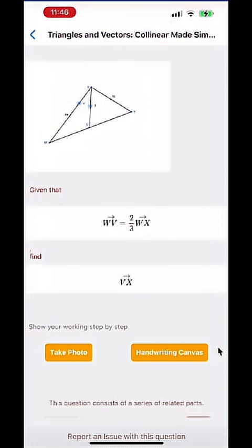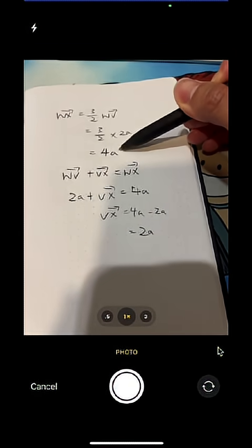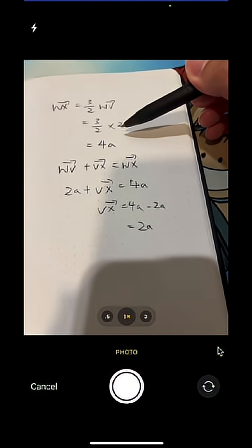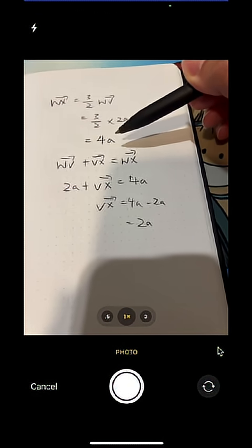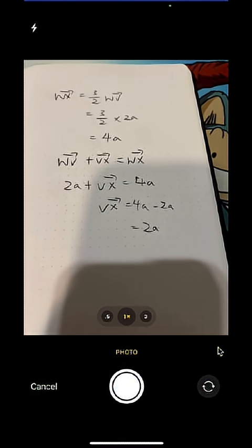Now once you have written the solution, you can take a photo. So this is my solution but actually over here I made a mistake where 3 over 2 multiplied by 2a is not 4a but 3a instead. So let's see whether this AI will actually spot our mistake.